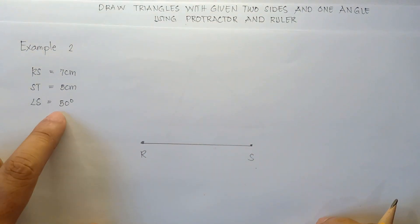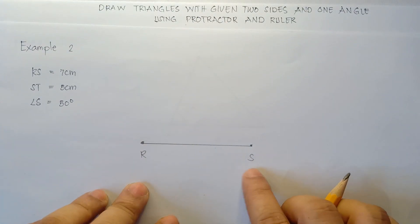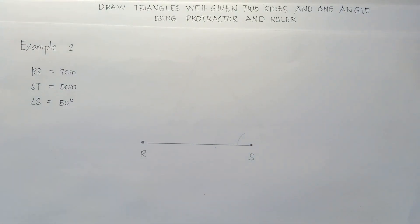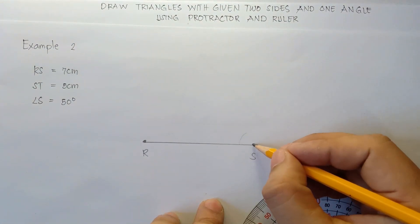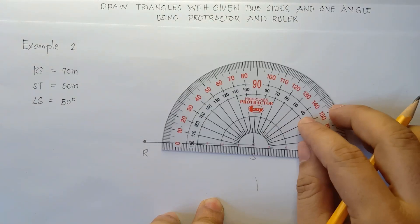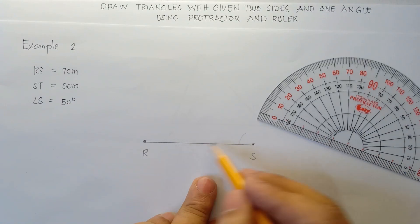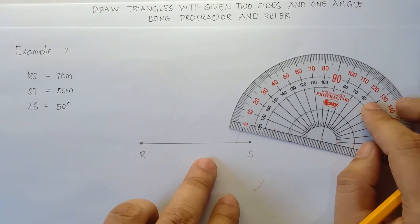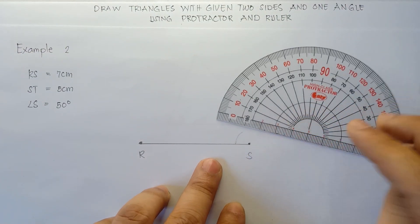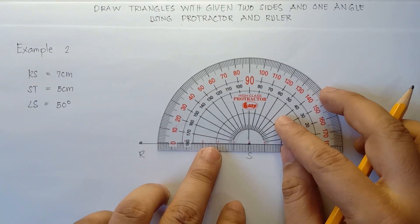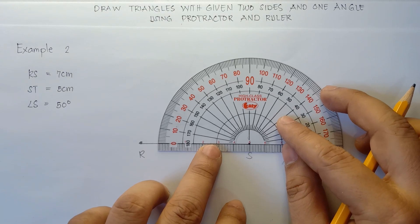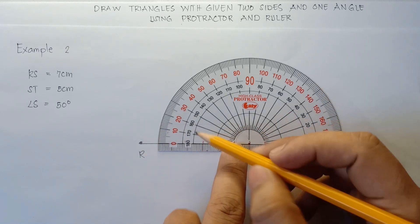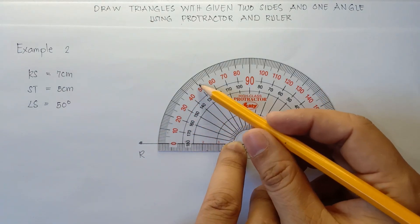Now we have given angle S, that is 50 degrees, therefore this will be our angle — it forms like this for S. Use your protractor to find 50 degrees: align point S in the center part of your protractor, and align zero in this horizontal line because your angle starts here. We will use the outer numbers: 10, 20, 30, 40, 50 — so 50 degrees for S.